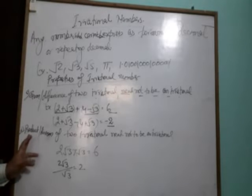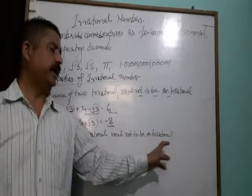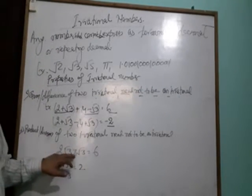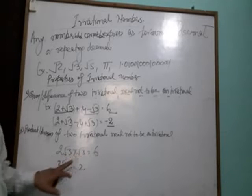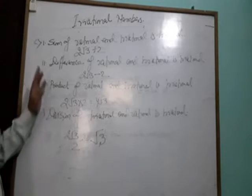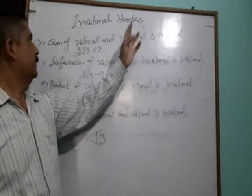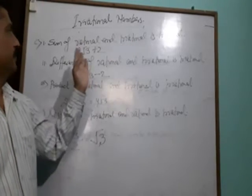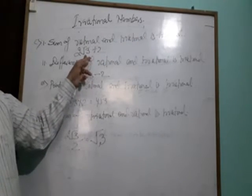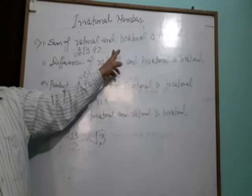Second property: the product or division of two irrationals need not be irrational. Just root 2 times root 3 into root 3 equals 6. 2 root 3 over root 3 equals 2.